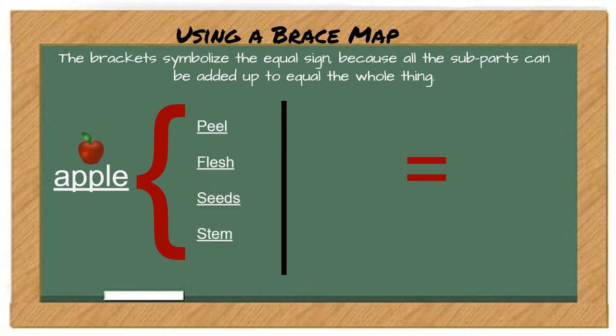It can be broken down into the peel, the flesh or the meat of the apple, the seeds, and the stem. Think of the peel plus the flesh plus seeds plus the stem gets you back to the apple as a whole.